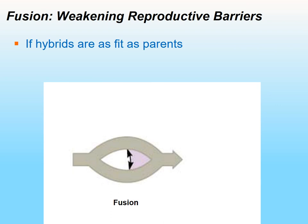Fusion occurs when hybrids are just as fit as the parents. The two populations mate and produce hybrids, and the hybrids can mate with parents and produce fertile offspring continuously. This weakens reproductive barriers, resulting in fusion of the population again into a new species. We had two separate species that now fuse into one whole new species with no hybrids — because the reproductive barriers have been weakened and the hybrids are as fit as the parents.